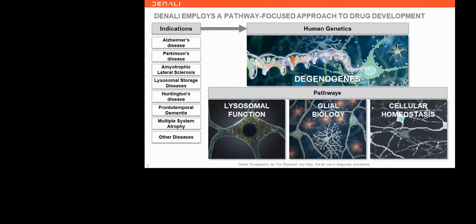A brief overview of the way that Denali approaches neurodegeneration: Denali employs a pathway-focused approach to drug development. Our targets come through human genetics and from what we call degenerative genes — genes that relate to neurodegeneration. We've broken these degenerative genes into a number of pathways around lysosomal function, glial, biotic, and cellular homeostasis. Today I'm going to focus on lysosomal function.